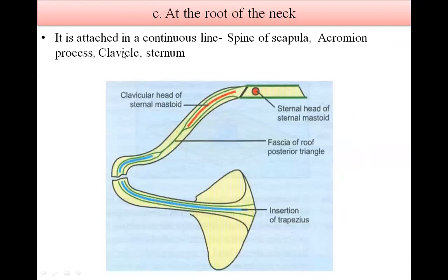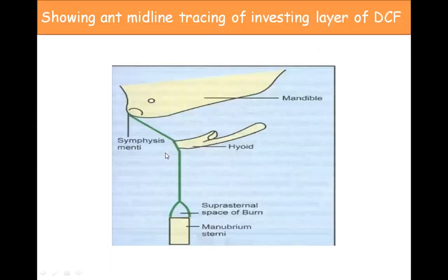At the root of the neck, the investing layer is attached in a continuous line from the spine of the scapula, acromion process, clavicle, and the sternum. This is the midline attachment of the investing layer.